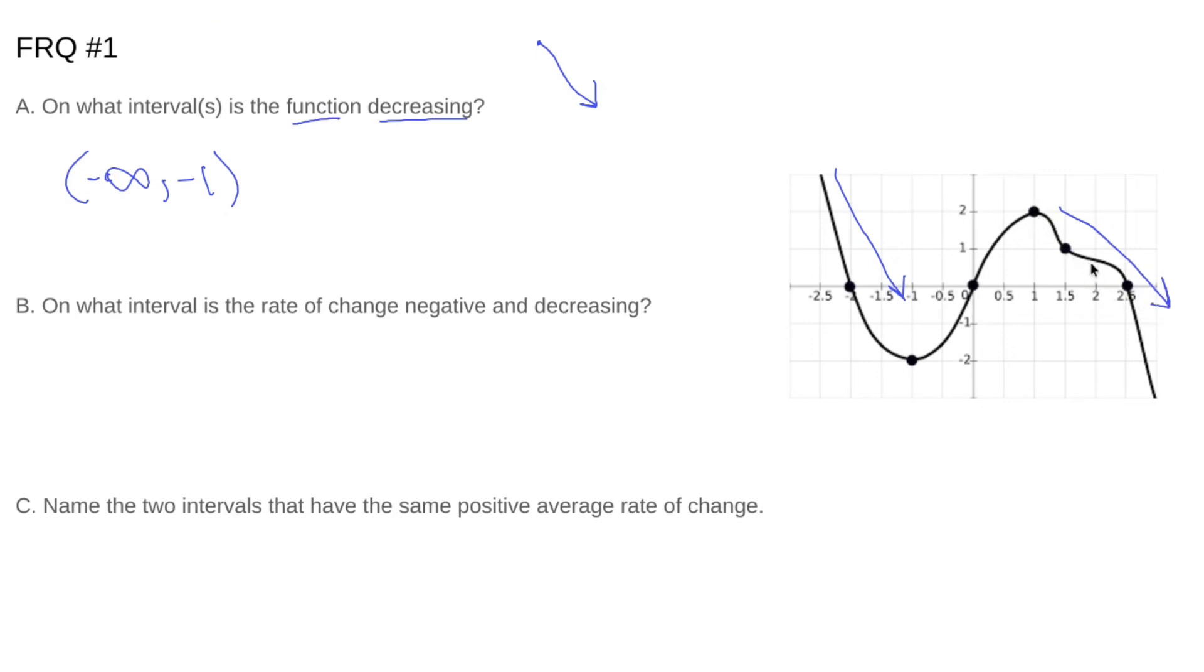It's just going down and to the right. So it picks back up from 1 to positive infinity. So we'll say union 1 to positive infinity. That is where our function is decreasing.